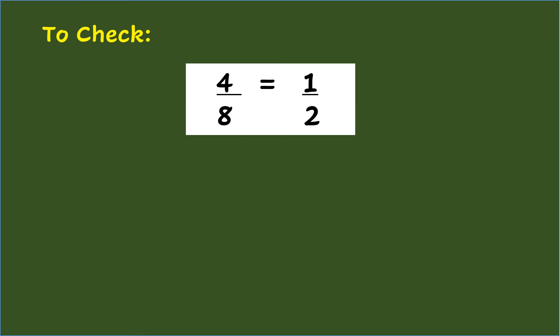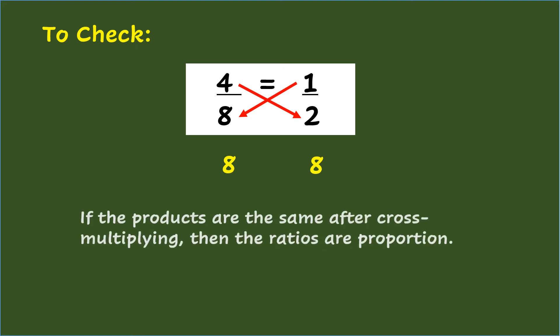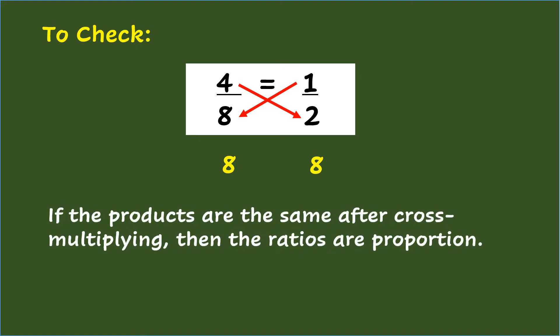To check whether two ratios in fraction form are equal, like 4/8 equals 1/2, apply cross-multiplication. Multiply the numerator of the first fraction by the denominator of the second: 4 times 2 equals 8. Then multiply the numerator of the second by the denominator of the first: 1 times 8 equals 8. If the products are the same, then the ratios are proportion.